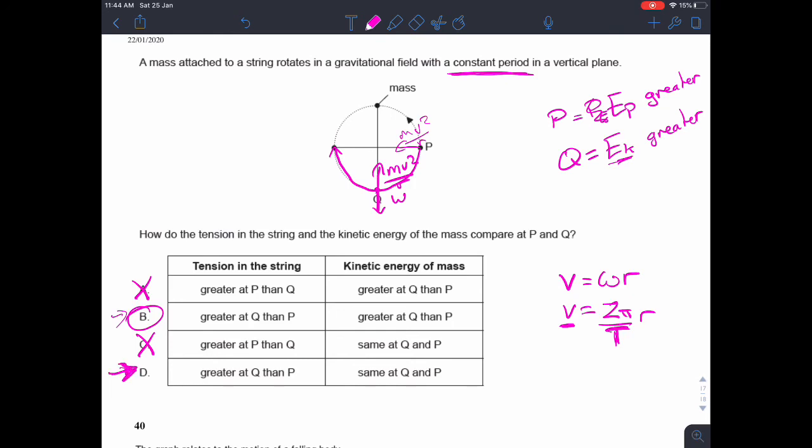However, you also need to satisfy the conservation of energy principles, which we discussed before, in which case the potential energy, the gravitational potential energy at P is definitely decreasing by the time it goes to Q. And if the potential energy is decreasing, then it must be being converted into kinetic energy because there's nowhere else for it to go. So that would mean that the kinetic energy should be greater at Q. So we've got kind of conflicting possibilities here.